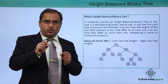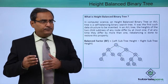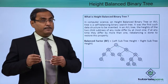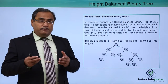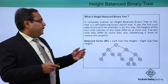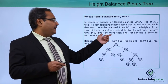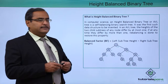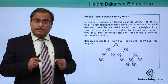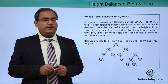That means for any particular node having a left subtree and a right subtree, the left subtree height and the right subtree height can be equal or can differ by one only. And if at any time they differ by more than one, rebalancing is done to restore this property. That is the main feature of the height balanced tree or AVL tree.